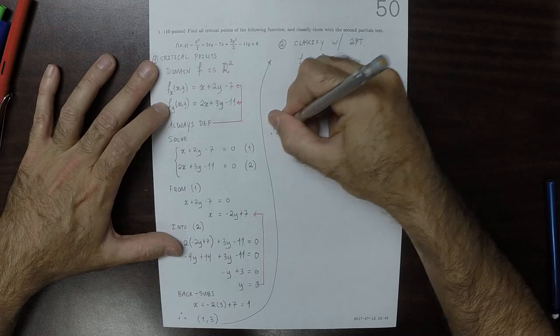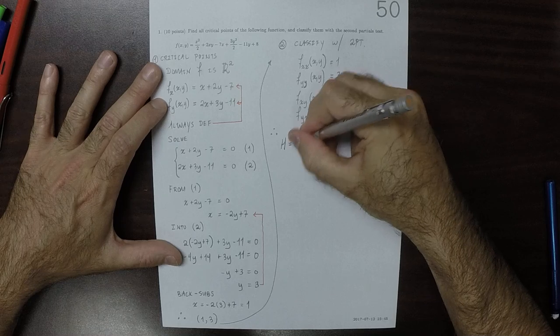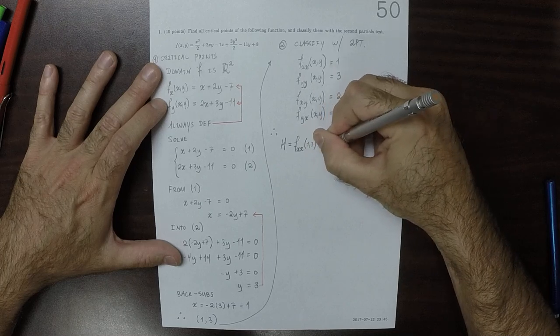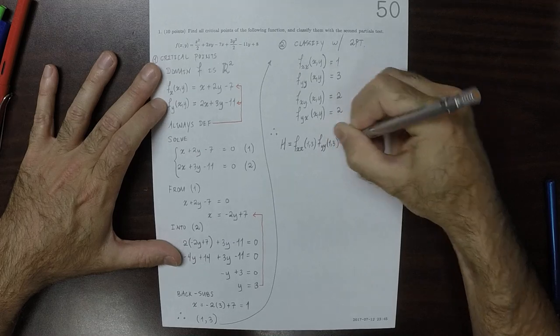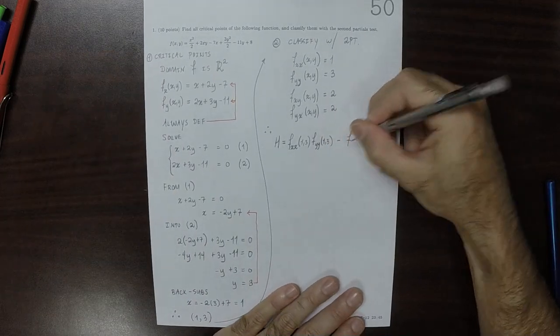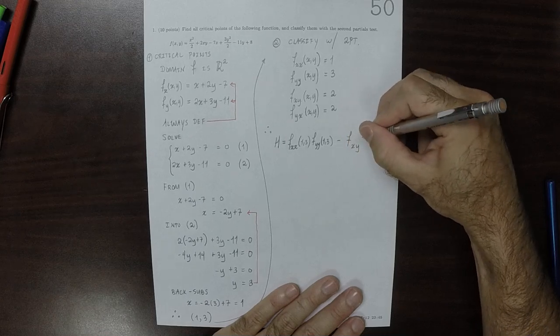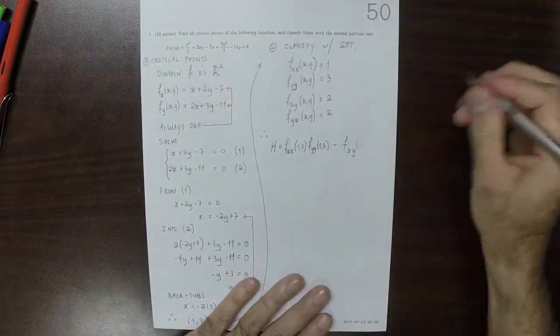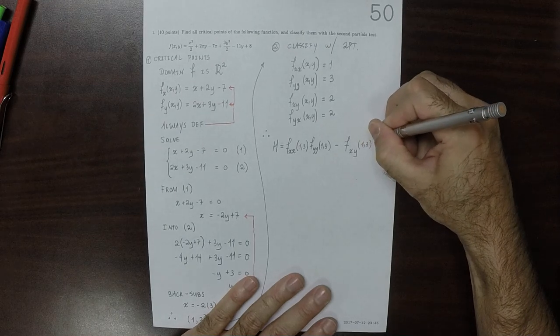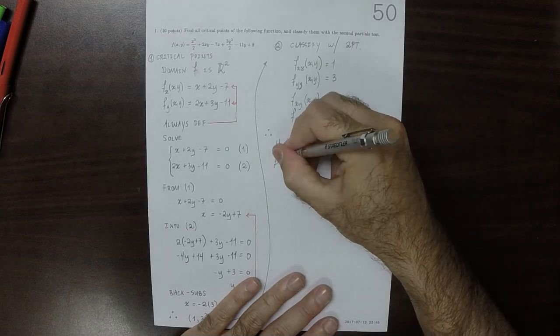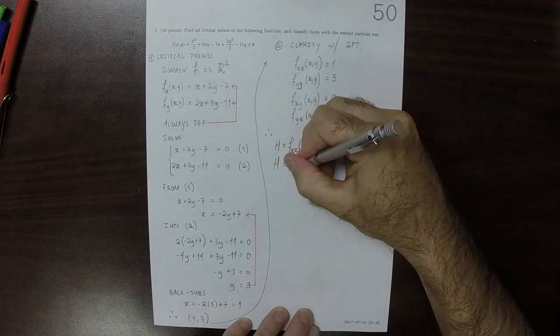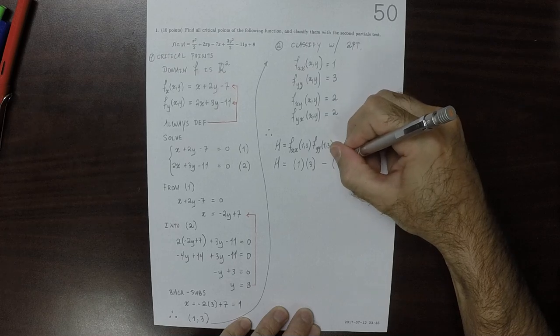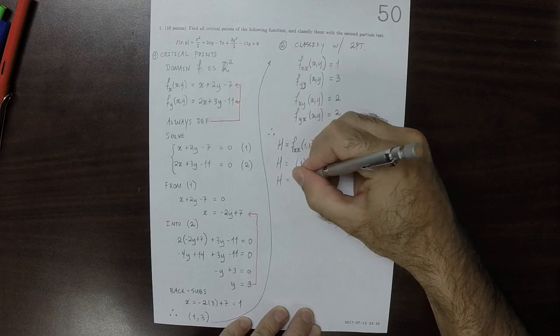Therefore, our classifier h is the product of the pure partials at 1, 3, minus the product of the mixed partials. But because the mixed partials are the same, we can just square either one of them. So it is 1 times 3 minus 2 squared, so that h is negative 1.